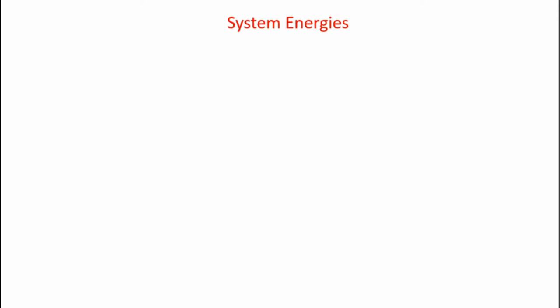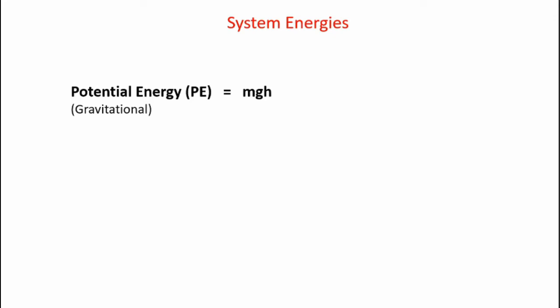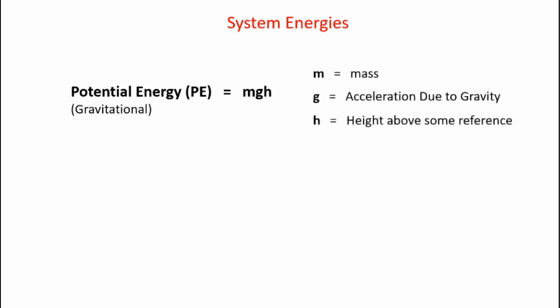Now let's take a look at the energies involved in the pendulum system. We have gravitational potential energy PE, equal to mgh, where m is mass, g is acceleration due to gravity, and h is height above some reference point. We also have kinetic energy KE, equal to one half mv squared, where m is mass and v is the velocity of the pendulum bob.